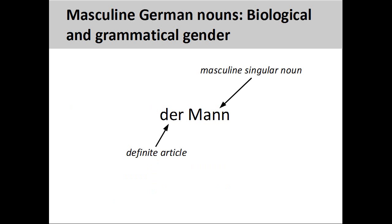You will recall from the presentation on German nouns that all singular nouns have a grammatical gender. This gender can be seen in the definite article. Here, the biological gender of the noun 'man' agrees with its grammatical gender. The definite article 'der' shows that this is a masculine singular noun.